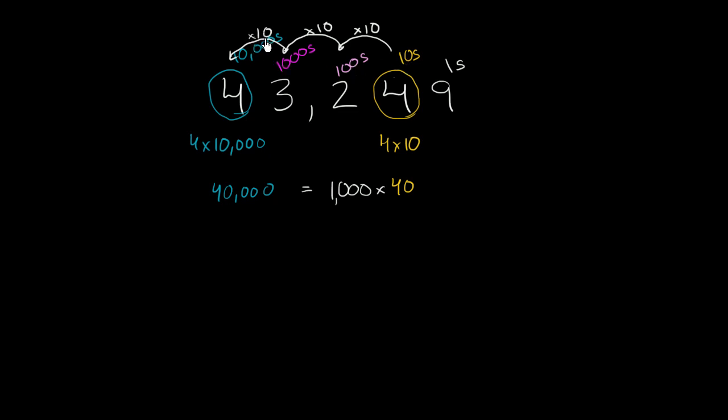The place values increase by a factor of 10 each time. So if you're going from this place to this place, and you have the exact same digit there, multiplying by 10 three times is the same thing as multiplying by 1,000. So whatever this represents, multiply it by 1,000, and you're going to get what this represents.